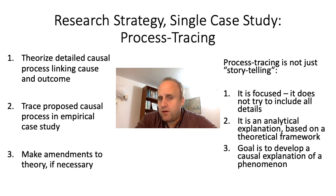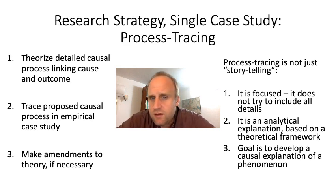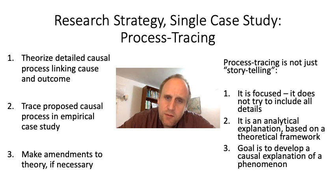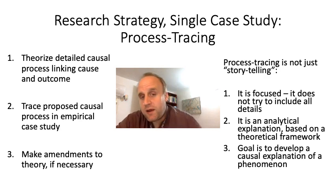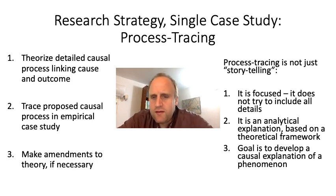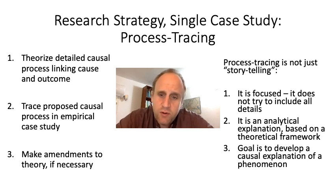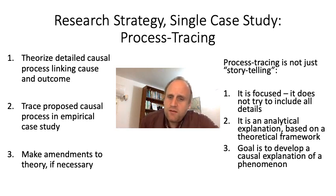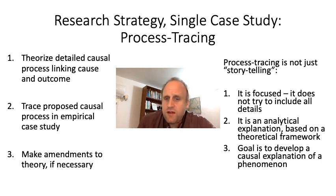You have a very detailed outline of how you think the dependent variable has been caused by the independent variable. And then you trace that in the empirical case study. When you have done that, you make amendments to your theory, or you might have to completely discard it. Sometimes you propose two alternative causal processes and then pick the one that better fits the case study. Process tracing is not just storytelling — it's focused. It doesn't include all the details of a case, only those relevant to that causal process. It's an analytical explanation based on a detailed theoretical framework.